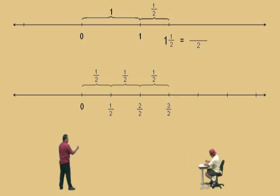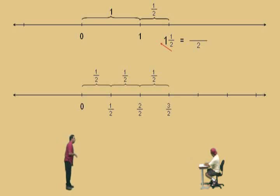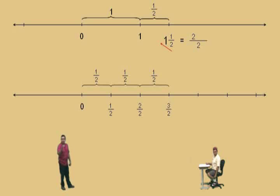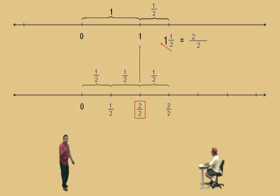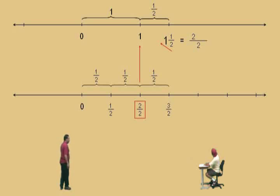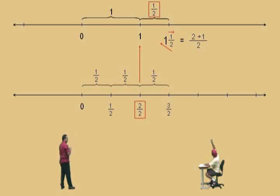To change the mixed number to the improper fraction, put a fraction bar with a denominator of two because we're dealing with halves. What do you do next? Two times one equals two. When you take two times one, it's telling you that two halves make up the one. Then you add another one — because you have two halves plus the other half — so two times one is two, plus the one-half, which gives you three halves.